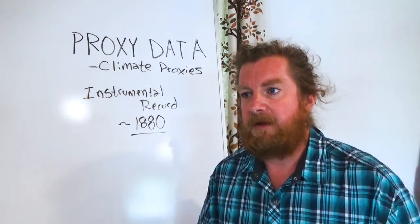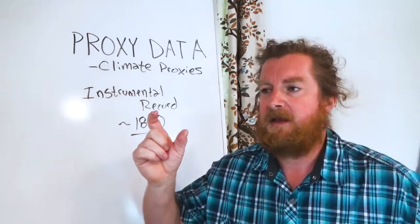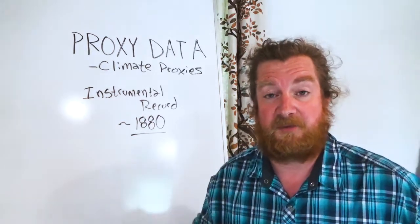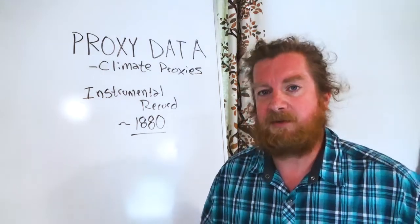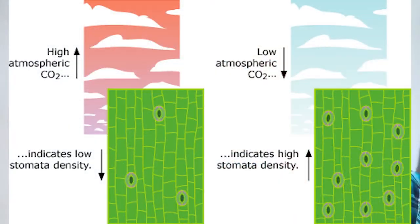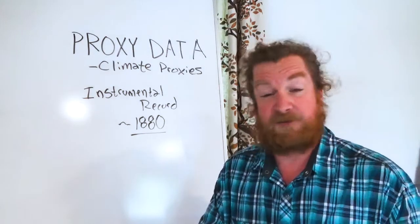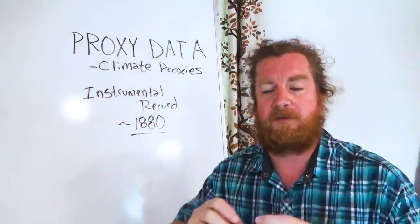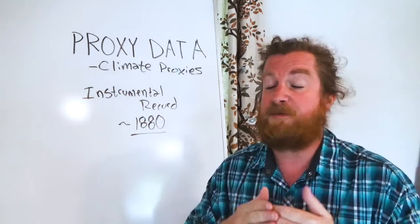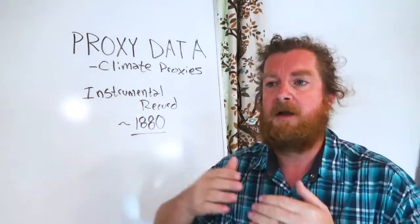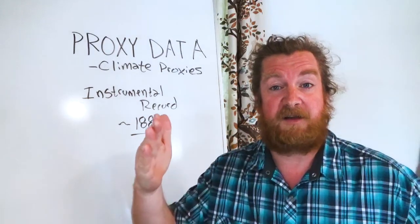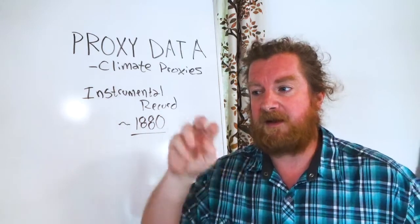Another proxy data we can use is the relationship between fossil leaves and stomata — little cells in the back of leaves that allow for photosynthesis and cellular respiration in plants. We've established a strong relationship between the amount of CO2 in the atmosphere and the density of stomata cells. This proxy data is great, but its failing is that we don't have perfect records for every year. Especially going deeper in time — back maybe a million years — we can use this to get glimpses at what CO2 concentrations were.